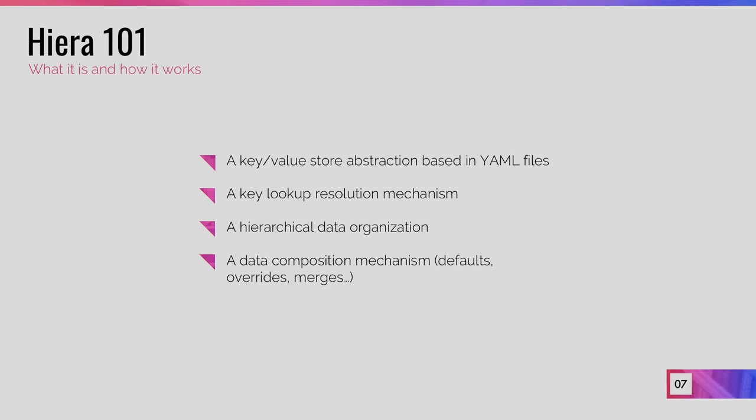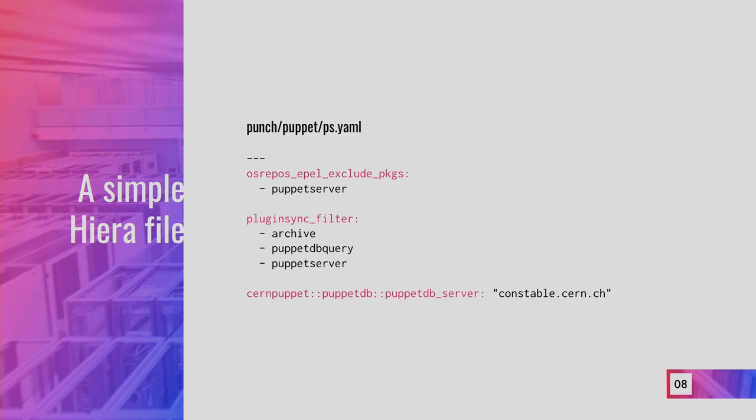Now that we know how to pronounce it, let's talk about what it is. Hiera is a key-value store abstraction based on YAML files. It allows us to separate data from code, from the manifest, and to have more reusable code. We define a hierarchy, and as we'll see later, you can also define hierarchies in modules, setting priorities for all the information. It allows us to perform lookups given a key, and to specify different mechanisms for data composition and for overwriting data.